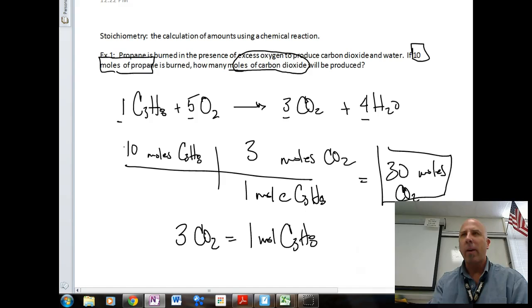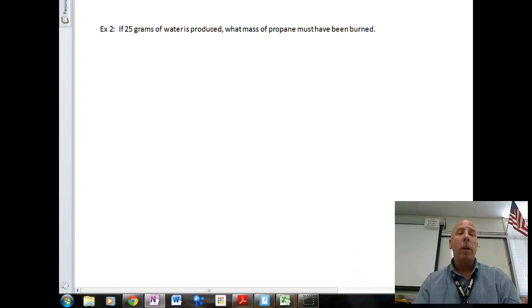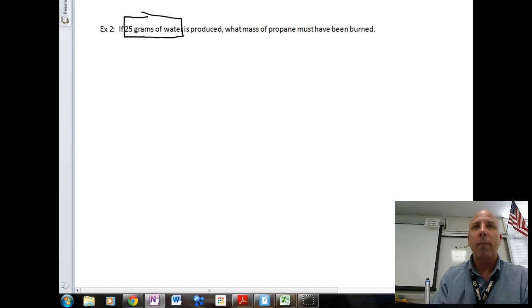Okay, so that was pretty easy and we're going through this fast because this was a review of regular chemistry. So let's go down here and see what else we have. It says, if 25 grams of water is produced, what mass of propane must have burned? So we're kind of going backwards on this one, which is fine. It doesn't matter where we start on the balanced equation or where we end on the balanced equation, as long as we can identify our known and our unknown.